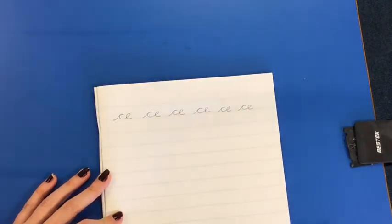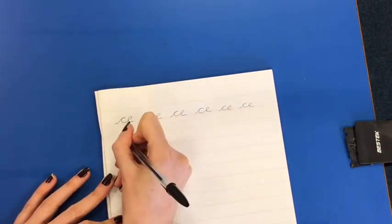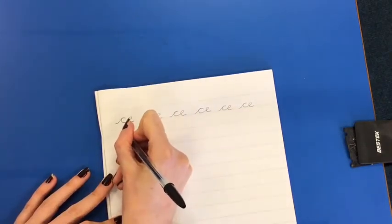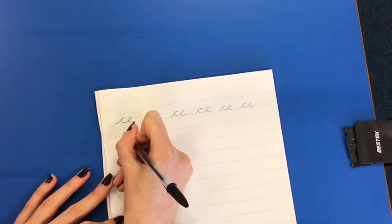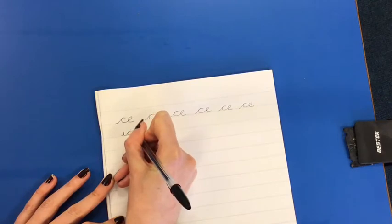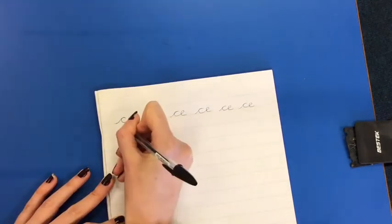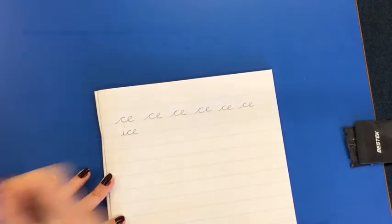There we go. We're now going to practice joining c and e in some words. The first word is ice. Starting on the line, my i is exactly the same size as my c, and my e is exactly the same size as well. I put my dot on at the end. And again, practice that word a few times. The next word we're going to try is race, so again starting...